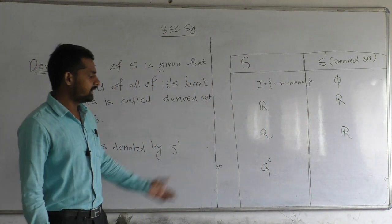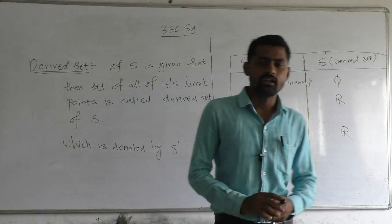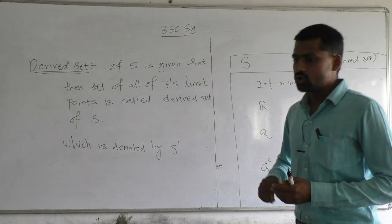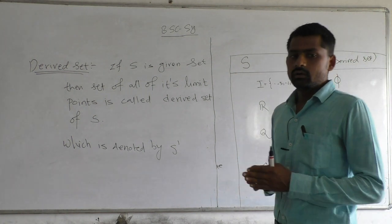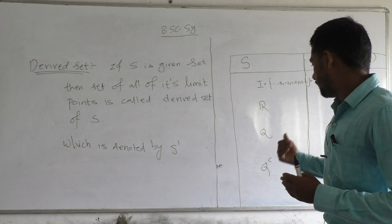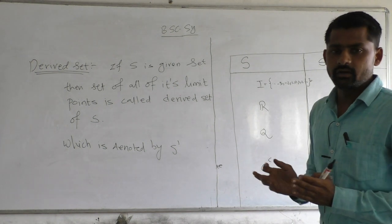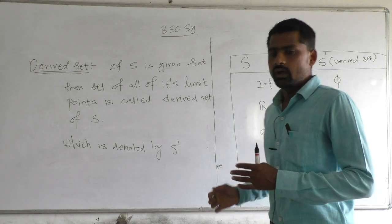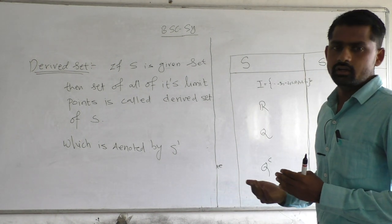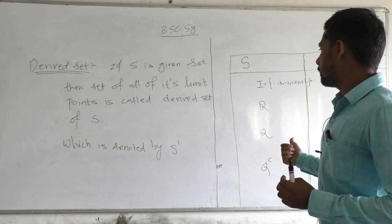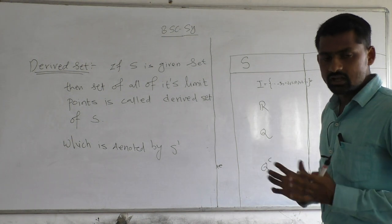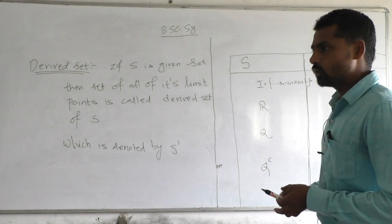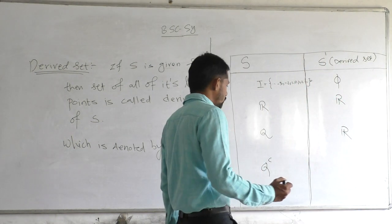Likewise for the set of irrational numbers: every irrational number is a limit point, because any neighborhood of an irrational number contains infinitely many rational numbers, and any neighborhood of a rational number also contains infinitely many irrational numbers. Therefore both rationals and irrationals are limit points of the set of irrational numbers, and the derived set of the irrationals is the set of real numbers R.